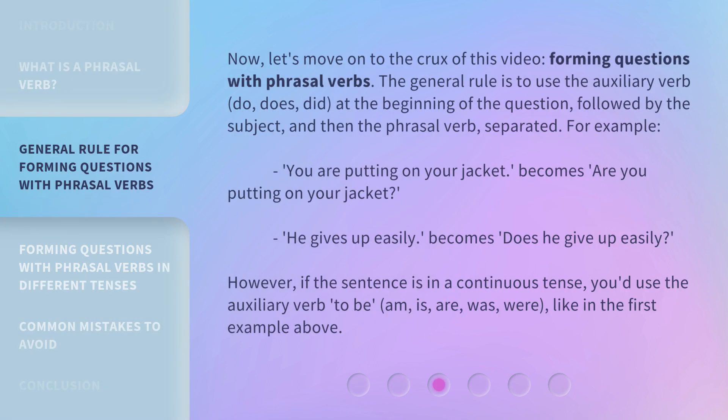Now, let's move on to the crux of this video: forming questions with phrasal verbs. The general rule is to use the auxiliary verb — do, does, or did — at the beginning of the question, followed by the subject, and then the phrasal verb, separated. For example, 'you are putting on your jacket' becomes 'are you putting on your jacket?' And 'he gives up easily' becomes 'does he give up easily?'